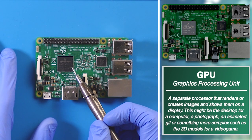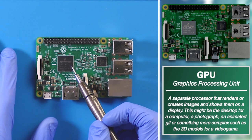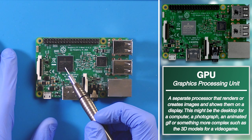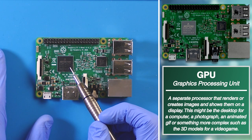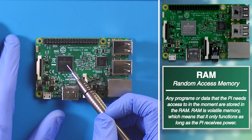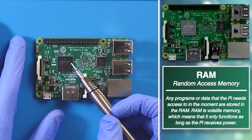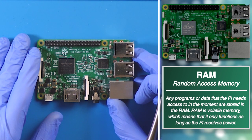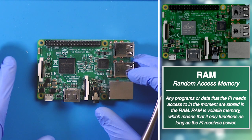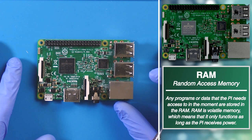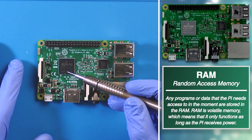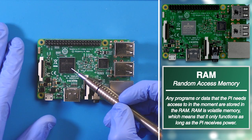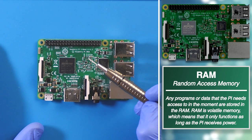This black square also contains our GPU, or graphics processing unit, which is used to draw out any images on screen such as the desktop, a photo that we might want to view, or an animated graphic. Importantly, this chip also contains the RAM for our Pi — the random access memory. If the CPU is our brain, the RAM is our working or short-term memory — the things we're concentrating on right now. Any information in the RAM is immediately available to the CPU, so any programs or software our Pi might be running, as well as the data that those programs need to run.